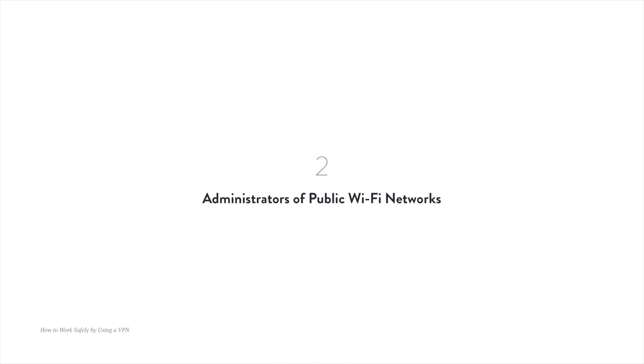Now, who are the people that could get access to this information? Well, first of all, your ISP — your internet service provider. Because you're directing all the traffic through their servers, they can theoretically see every website you visit. Second, there are the administrators of public Wi-Fi networks — think coffee shops, shopping malls, airports. Anywhere there's a free Wi-Fi network you can connect to, the people in charge can get access to your internet activity. Third, and these are the most dangerous, we have the hackers, who have the technical expertise to get that information and do bad things with it.